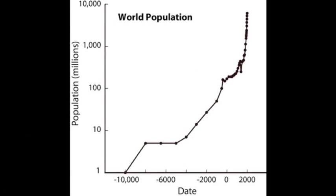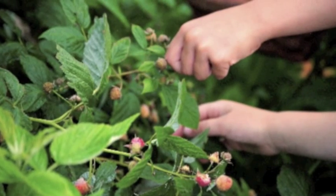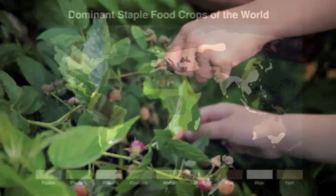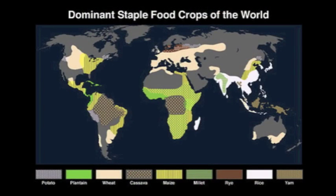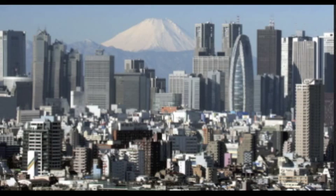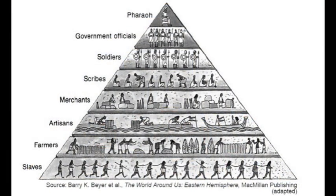The Neolithic Revolution impacted people back then because it increased population by producing a steady supply of food. Also, everyone could live in one place permanently without having to constantly move around. It impacts us greatly today as well — farming continues to increase our population size, which creates bigger cities. Also, farming and agriculture is our world's number one source of food.